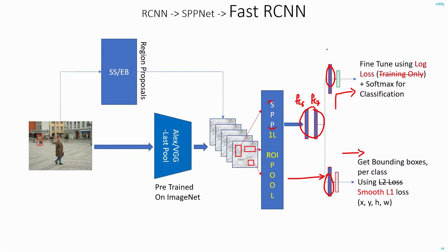They added one fully connected network to both the classification and the bounding box regressors. So the fully connected layer for classification will learn the weights specific to classification, and the fully connected layer for bounding box regression will learn weights specific to bounding box regression, while these two shared layers will be common to both.